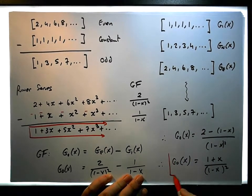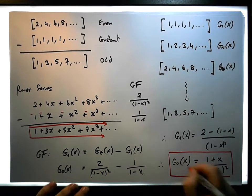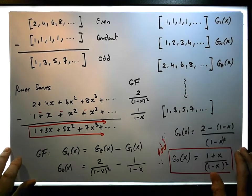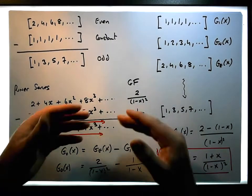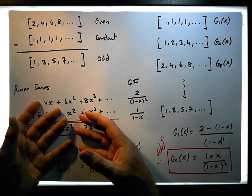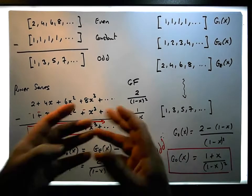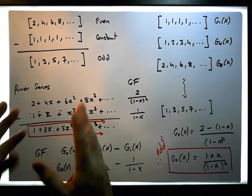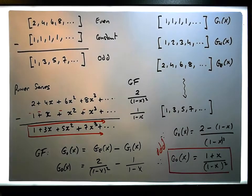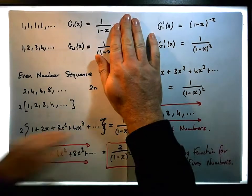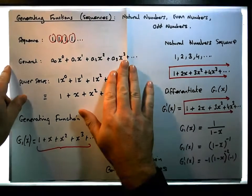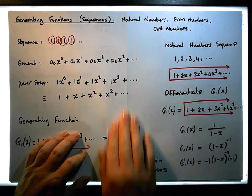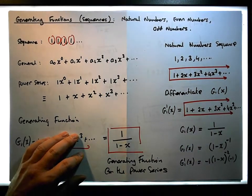So what we've actually calculated here is the generating function associated with the odd numbers. Hopefully this video has allowed you to see that once we have generating functions associated with other sequences, we can use them to develop new generating functions for new sequences. This was Jonathan Lambert with Maths and Stats — this video deals with generating functions for the natural numbers, even numbers, and odd numbers. I hope it was intuitive and helpful. Thanks for watching.